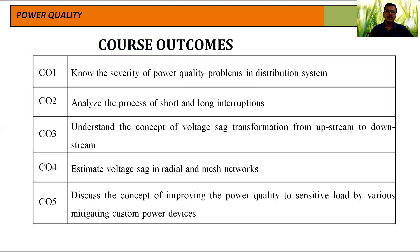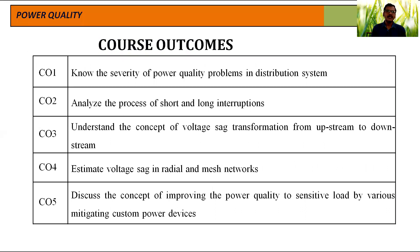Coming to the course outcomes. At the end of this course, the student will be able to learn these outcomes. The first outcome is to know the severity of power quality problems in distribution systems. Every power quality problem has its severity, and the severity may change from one aspect to another.